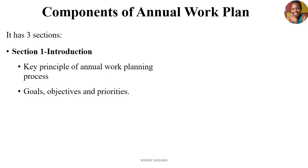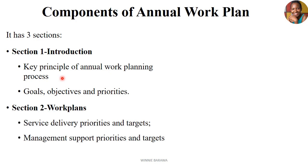The annual work plan has three sections. Section one is the introduction, highlighting the key principles, goals, objectives, and priorities. Section two is the main work plan, where service delivery priorities and targets are set, along with management support priorities and targets. For example, if we are targeting to increase birth rates by 10 percent, those are our priority targets, and we also bring out the management priorities related to that.